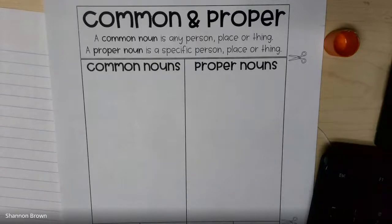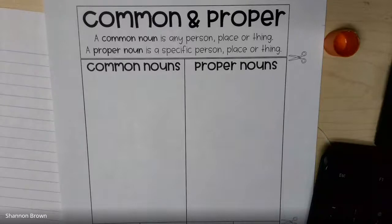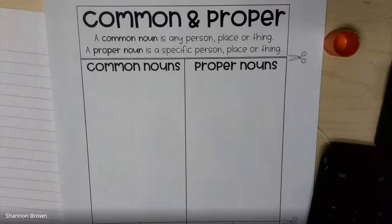Common nouns are a basic noun. It could be a desk, it could be a boy, it could be a girl, restaurant, candy bar, month. Those are all non-specific words. They don't give you an actual name.